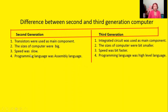The programming language used in second generation computers was assembly language, and in third generation computers the programming language was high-level programming language.